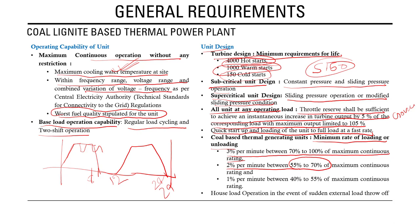At higher loading levels the unit is more stable compared to lower loading levels. If a very high ramping rate is applied at lower loading, the unit may become unstable. Therefore the ramping rate at lower loading is kept lower — 1 percent per minute between 40 to 55 percent of maximum continuous rating, with the operating range being 40 to 100 percent.